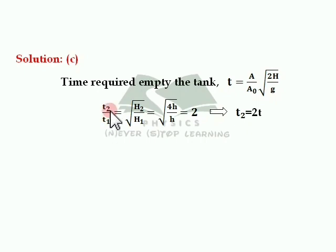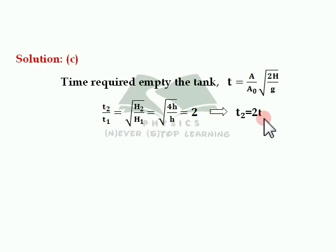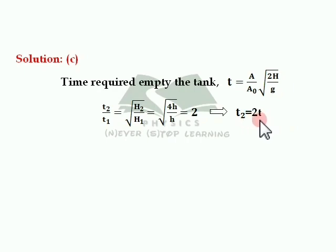So t2 by t1 equals root of h2 divided by h1. h2 is the height of water in the second case and h1 is the height in the first case. Height in the second case is 4h and in the first case it is h. Substituting: root of 4h over h — the h's cancel, root of 4 is 2. Therefore t2 by t1 equal to 2, which implies t2 equal to 2 times t1. Since t1 is given as t, we get t2 equal to 2 times t.